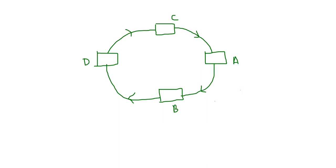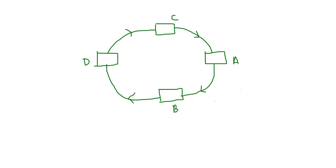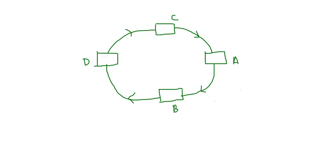Now let's look at the advantages and disadvantages of ring topology. First advantage: all data flows in one direction, reducing the chance of packet collisions. Since data flows in one direction only, there is no chance of packet collision. Second advantage: a network server is not needed to control network connectivity between each workstation.